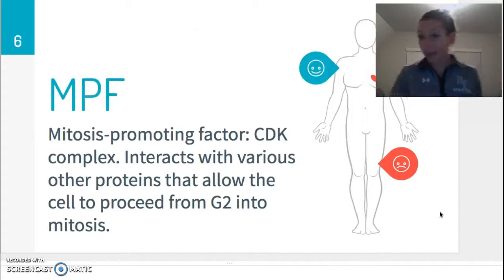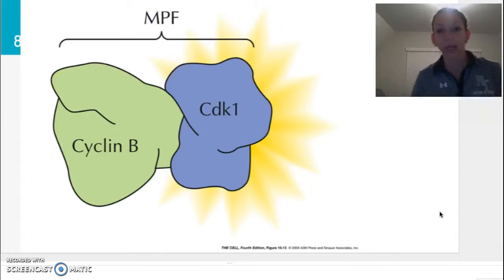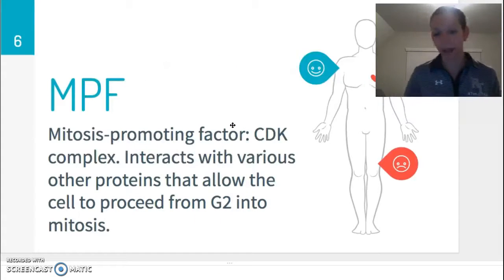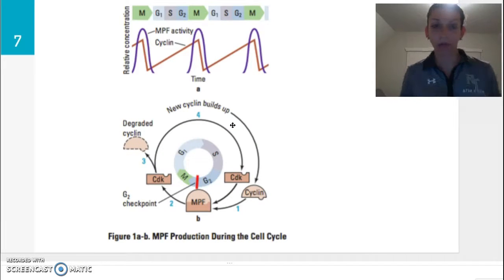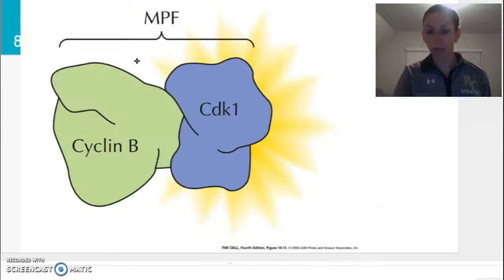So MPF, this is our mitosis-promoting factor. This is a specific cyclin-dependent protein kinase complex. So let's take a look at what it looks like really quick. We have our cyclin, which is a special type of protein, this is cyclin B combined with this enzyme, our CDK. And then together, this entire complex is called our MPF or our mitosis-promoting factor.